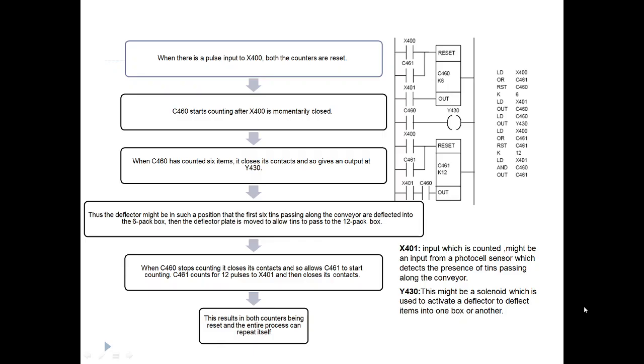With the pulse of input X400, both the counters are reset. Input which is counted might be an input from the photocell sensor which detects the presence of tins passing along the conveyor. Y30 might be the solenoid which is used to activate the deflector to deflect the items into one box or another.